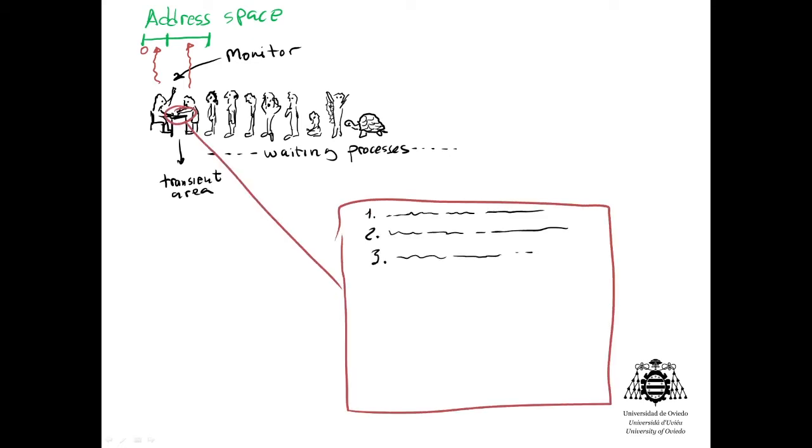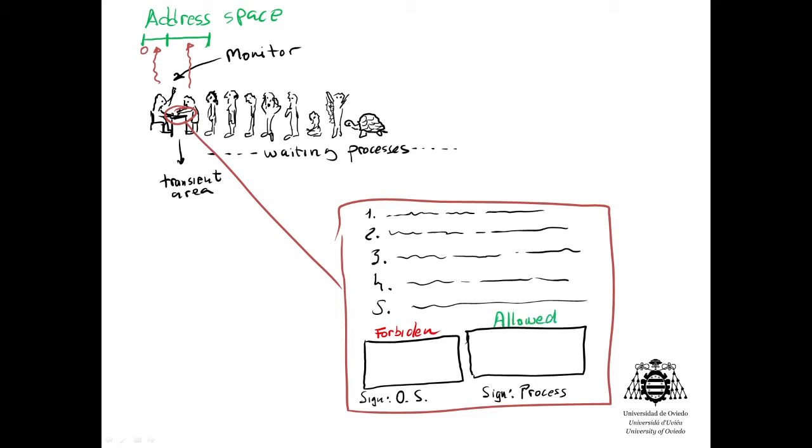As in any further situation, we have to control the processes to avoid accesses to forbidden addresses—those of the operating system in this case, more in the future.